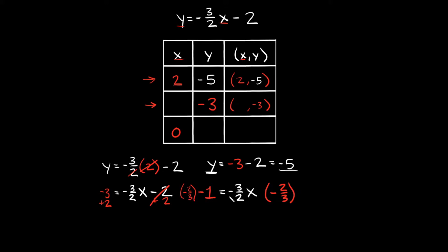Negative 3 halves and negative 2 thirds cancel out, so we're just left with x on this side. That's going to be equal to negative 2 thirds times negative 1. Well, 2 thirds times 1 is just 2 thirds, and a negative times a negative is a positive. So x is equal to positive 2 thirds. So now we've figured out our x-coordinate: it's positive 2 thirds. Your ordered pair right here would be positive 2 thirds comma negative 3.